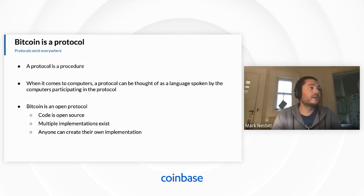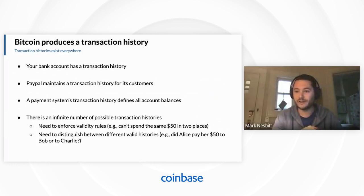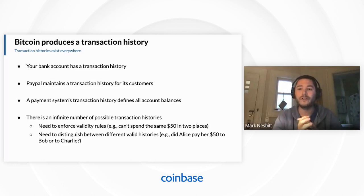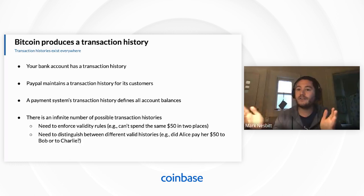Bitcoin is a protocol for producing a transaction history. Transaction histories exist everywhere — you're probably very familiar with them. Your own bank account has an individual transaction history specific to you. Your bank or PayPal maintains a transaction history for all its customers, so you can think of your personal transaction history as a filtered view of that global transaction history. A payment system's transaction history will define all of its account balances. If we know some initial state and then transactions occur, if we know the entire transaction history, we can determine everyone's balance.